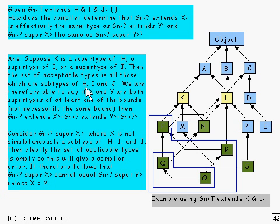Because you have to have the intersection of all the subtypes of H, I and J, basically. We are therefore able to say that if X and Y are both supertypes of at least one of the bounds, which are not necessarily the same bound, then Gn of something that extends X is going to be the same type as Gn of something that extends Y or, of course, Gn of the wildcard.